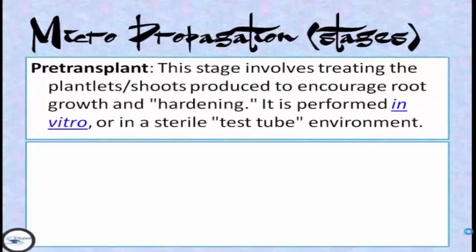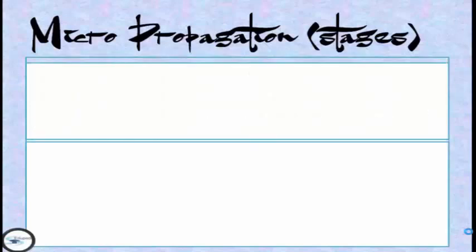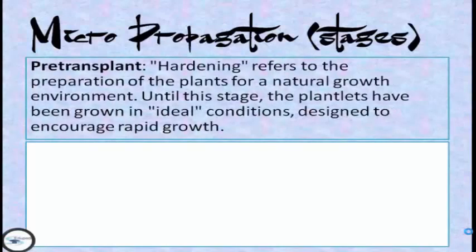The third process is pre-transplant. This stage involves treating the plantlets or shoots to encourage root growth and hardening. It is performed in vitro, or in a sterile test tube environment. Hardening refers to the preparation of the plants for a natural growth environment. Until this stage, the plantlets have been grown in ideal conditions designed to encourage rapid growth.